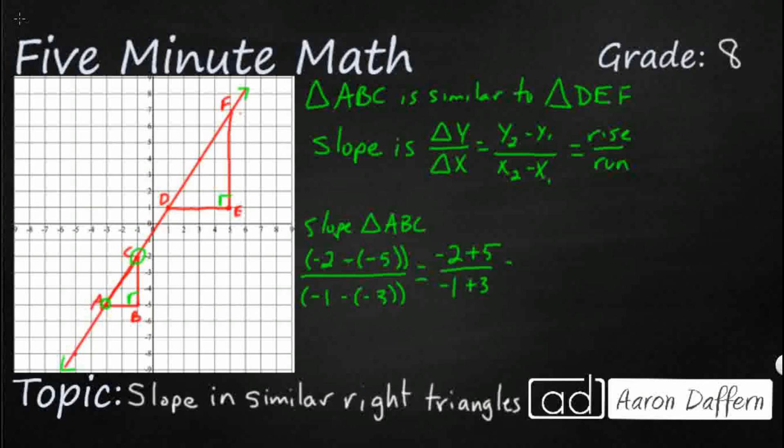And if we want, we can use the commutative property to flip these. That's 5 minus 2, 3 minus 1. All right. So it looks like I have a slope of 3 halves - 3 over 2.